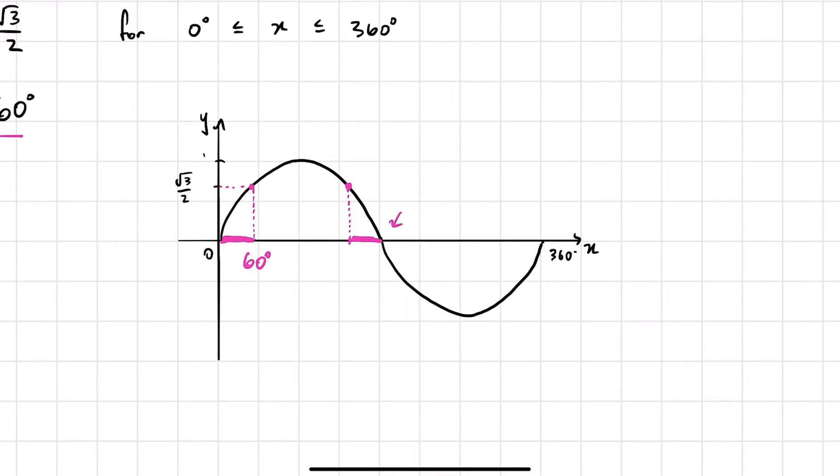From our knowledge of the sine curve, that point is 180 degrees. So this one here should be 180 minus 60 degrees. Does that make sense? So that will give us the answer of 120. So this is 180, and then we're subtracting just 60.